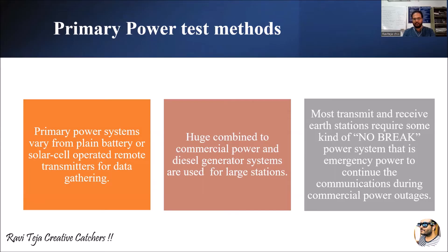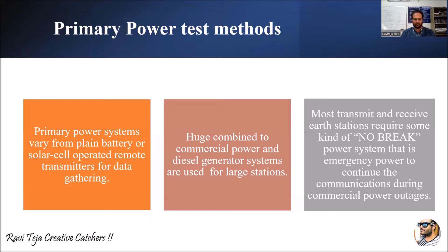We need emergency power to continue communication during commercial power outages. The power system must be able to continuously supply the earth station in order to communicate with the satellite. Whenever commercial power or some sort of power provided for these earth stations has outages, we need a no-break power system. Primary power test methods are introduced for continuous power supply to the earth station.